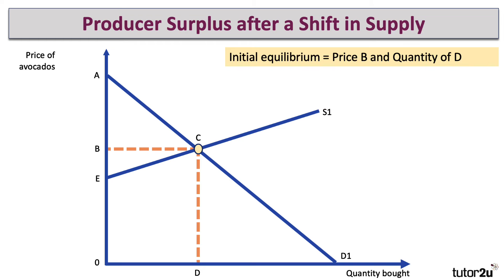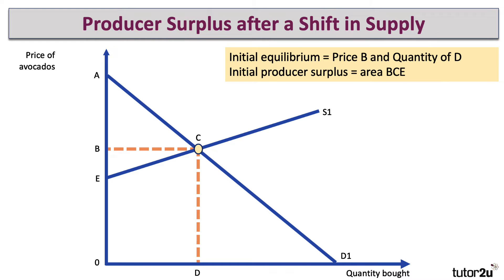Let's have a look at the effect of a shift in supply on producer surplus. Let's take the example of a farmer growing or supplying avocados to a market, where the initial price is B and the quantity bought and sold is D. Initially, the producer surplus is the area above the supply curve and below the price — the area B, C, E.